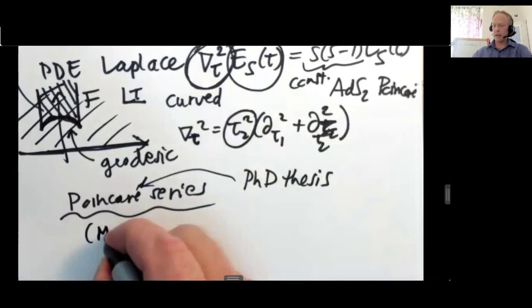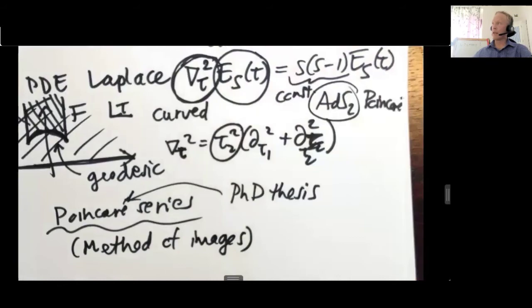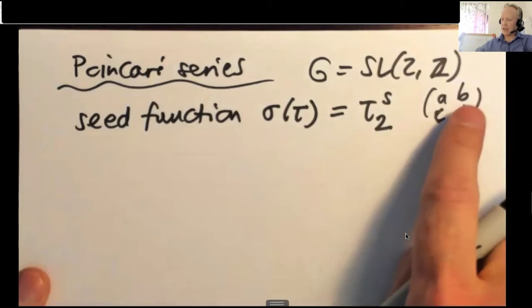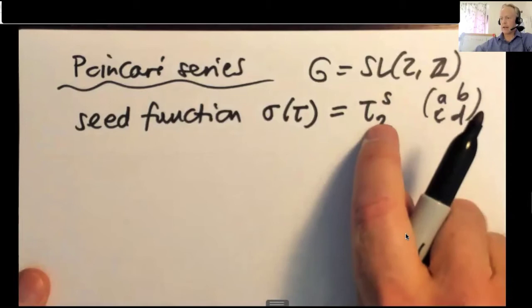And then you naturally get automorphic forms because to physicists, this is basically the method of images, which is a way to construct something that has a symmetry that it previously didn't have. This can be useful, I think, also from the point of view ADSCFT, though I'm not doing ADSCFT here. So we're trying to compute the action of SL2Z on tau and then taking the imaginary part and eventually raising to power s.